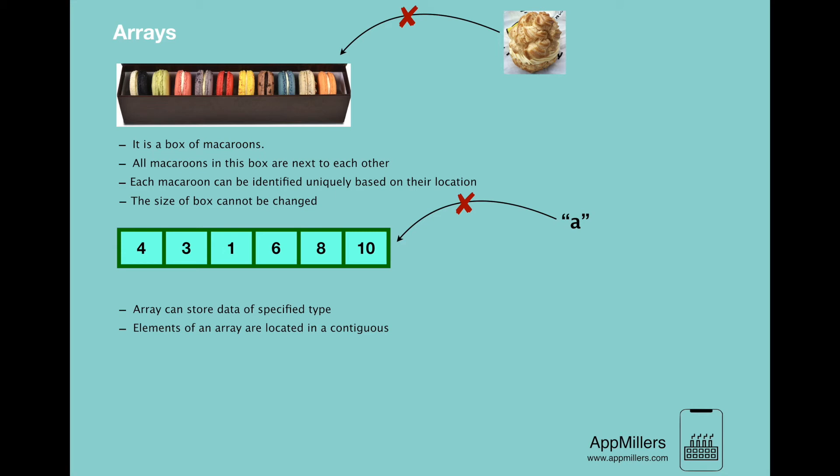This means that elements of array are next to each other. So there is no gap between them as we have in the macarons box. As you see, we don't have any gap here and we don't have any gap between these elements. They are located next to each other.